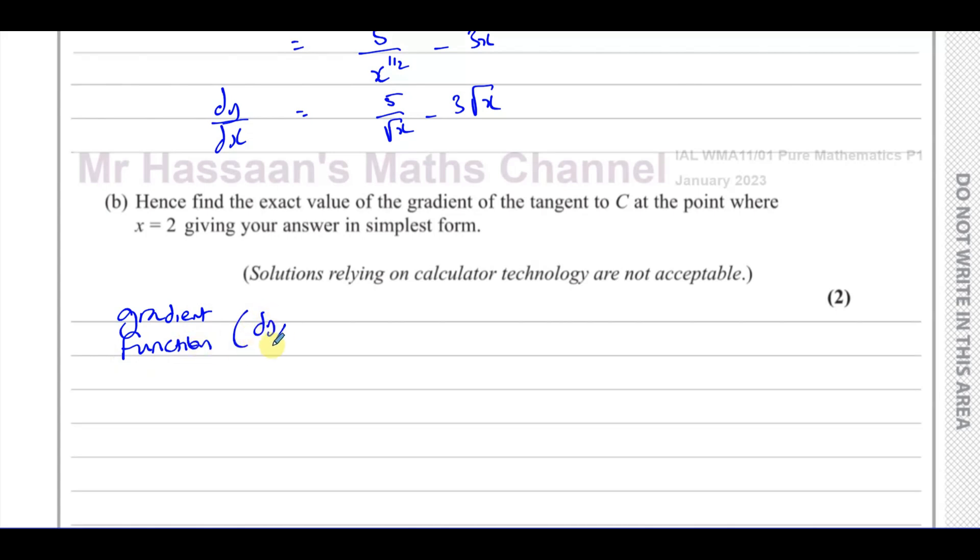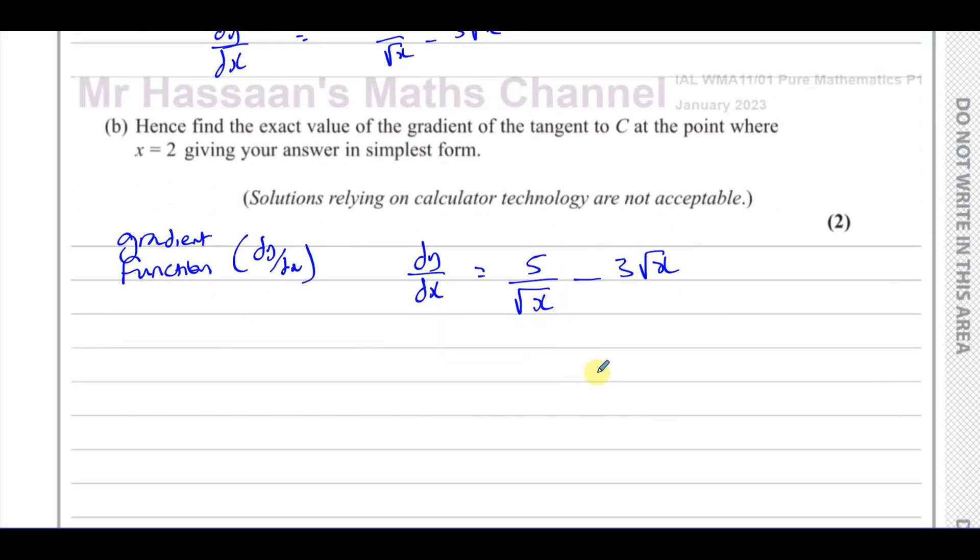So dy/dx is the gradient function. And we know that dy/dx, in its friendly form for substitution, is 5 over root x minus 3 times root x. That's a nice way to write it. So when you have to substitute value in. And we need to know what dy/dx is when x equals 2. So we replace the x with 2 here. And we simply write down or simplify that.